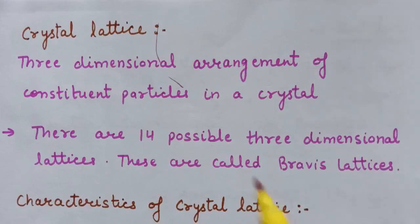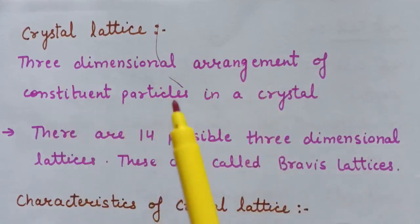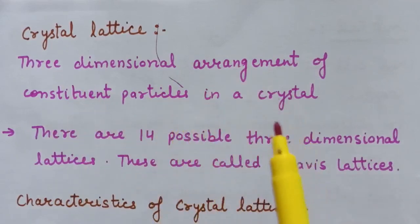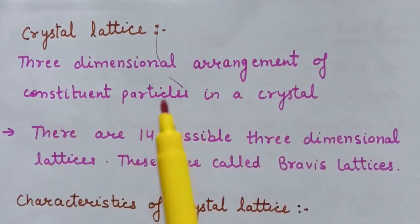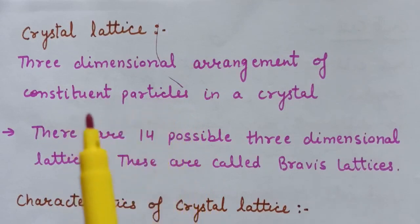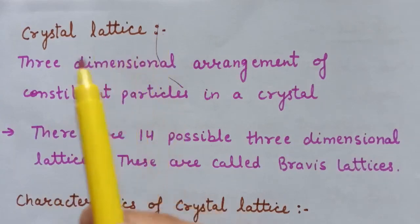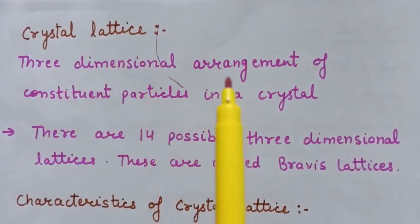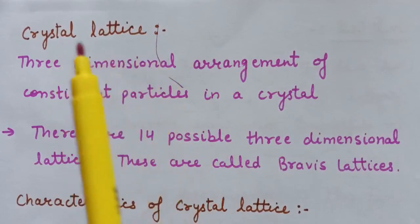Crystal lattice is a three-dimensional arrangement of constituent particles in a crystal. As we know that in crystalline solids, the constituent particles are arranged in a regular pattern and the range is long-range order. Crystal lattice is defined as the regular three-dimensional arrangement of points in space.